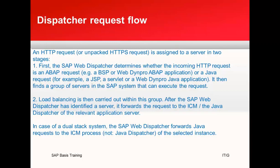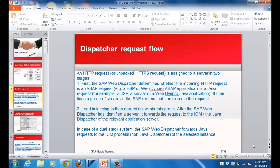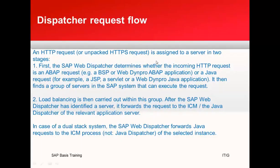When an HTTP request is assigned to a server, it is assigned in two stages. First, the SAP Web Dispatcher determines whether the incoming HTTP request is an ABAP request — which could be a BSP or a Web Dynpro application — or a Java request, which could be a JSP, a servlet, or a Web Dynpro Java application. Once it has determined the type of request, it finds a group of servers in the SAP system that can execute the request.